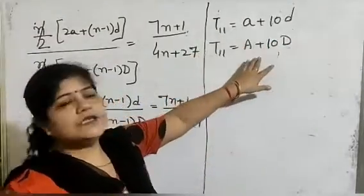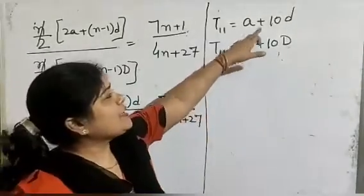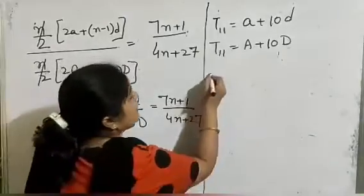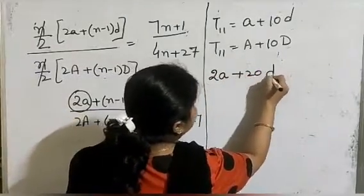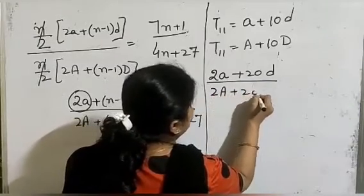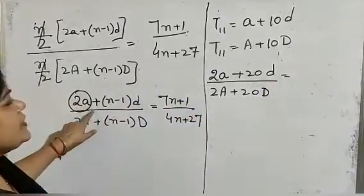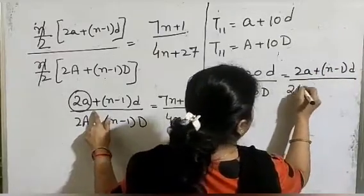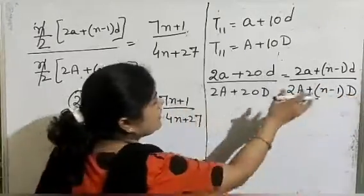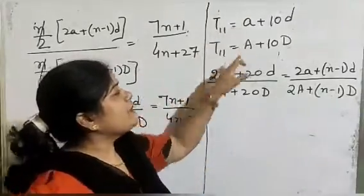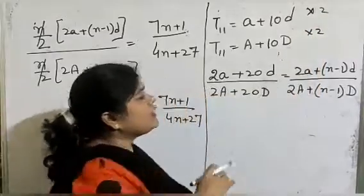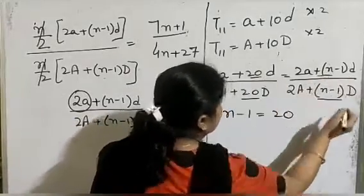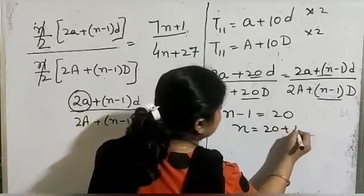Now we need to find the ratio of these two. When we observe, we have (a + 10d) and (A + 10D). We multiply both by 2 to get (2a + 20d) / (2A + 20D). Comparing with (2a + (n−1)d) / (2A + (n−1)D), we see that n − 1 = 20 for both cases. So the value of n becomes 20 + 1 = 21.